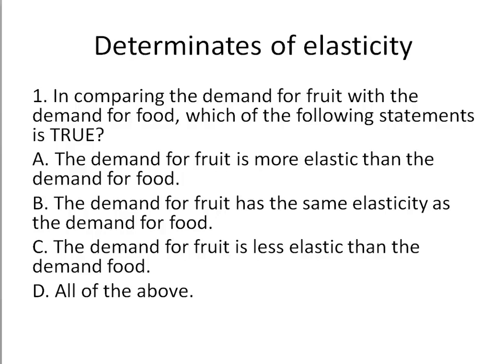In comparing the demand for fruit with the demand for food, which of the following statements is true? Well, we know that fruit is part of the category of food, and fruit is more narrowly defined, which means if the price of fruit goes up by 10%, there's a lot of other things I could substitute into. But if the price of food goes up by 10%, what am I going to substitute into? So food is going to be less elastic because there's not a lot of substitutes, and fruit is going to be more elastic because there's vegetables, grains, a bunch of different things.